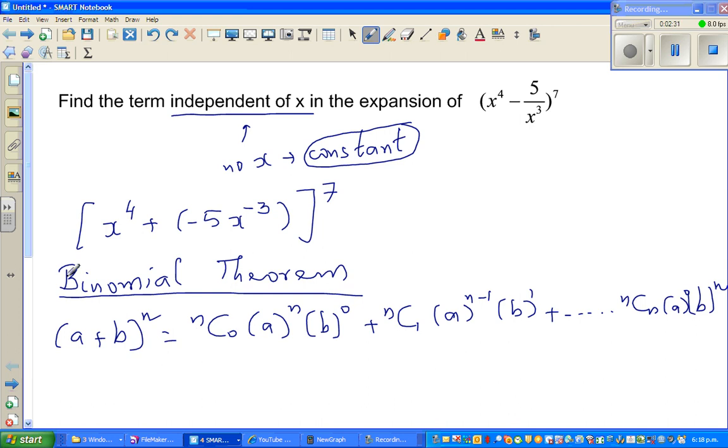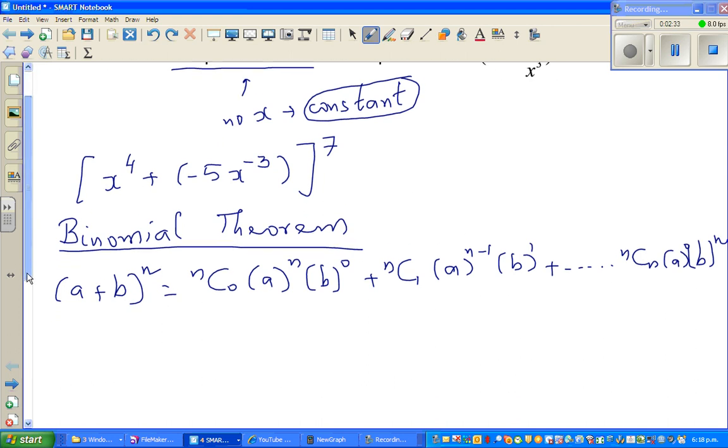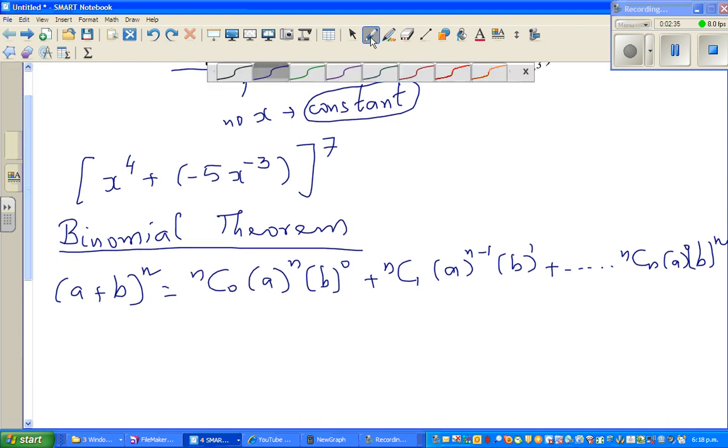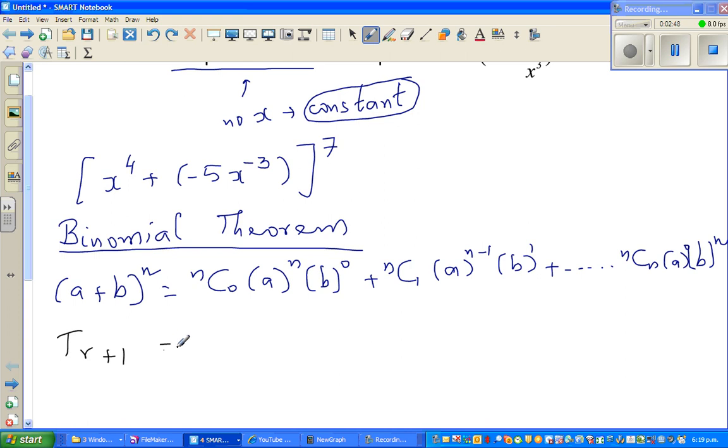So if you want to write a general form, if you want to find a particular term, this is the formula, T sub r plus 1. It is nCr, a to the power n minus r, we are generalizing this above, b to the power r.